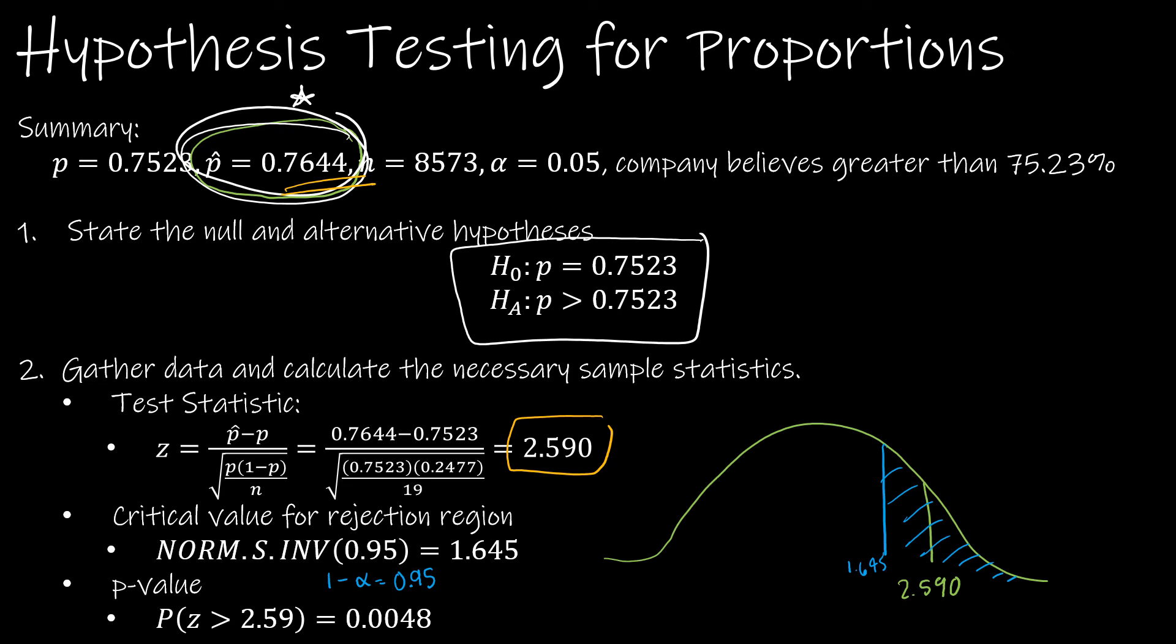In addition, I can use norm - this is a right-tailed test. So it's 1 minus norm s dist of my z-score to find my p-value. Notice that my p-value is in fact less than alpha. Therefore, it tells me to reject.